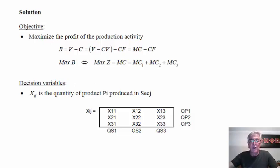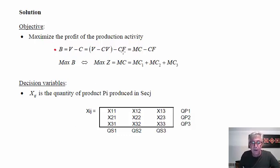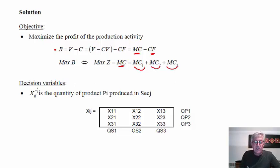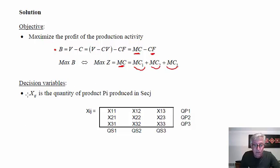To formulate this problem, we start by identifying the objective: maximize the profit of the production activity, which means maximizing the total contribution margin from products one, two, and three. The decision variables are now more complex because we must decide not only how much to produce but also where to produce it. We handle this complexity by using variables with two indices: X_{i,j} stands for the quantity of product i produced in section j.